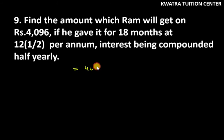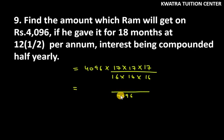So this will be 4,096 into 17 raised to 3 divided by 16 raised to 3. The cube of 16 is 4,096 and the cube of 17 is 4,913. 4,096 cancels out and your answer is 4,913 rupees. So this is the answer for question number 9.